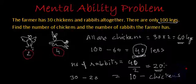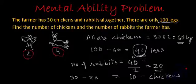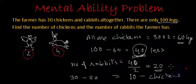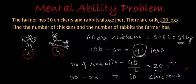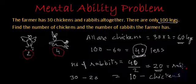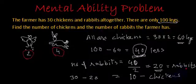Because we initially assumed all of them are chickens, and then we found out that 40 legs were still unused. Since each rabbit has four legs, we give two extra legs to each animal to convert them from chickens to rabbits. So we got 40 divided by 2, that is 20 rabbits and 10 chickens.